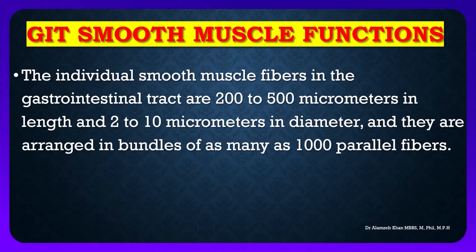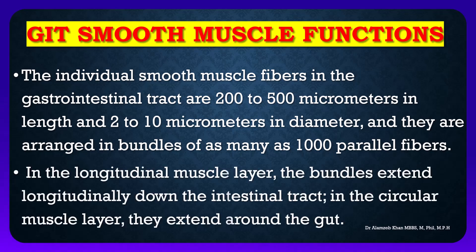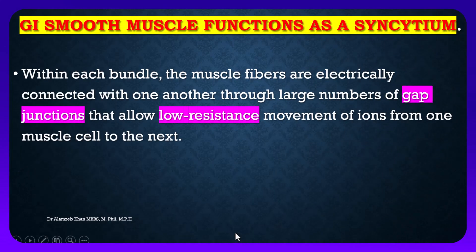The individual smooth muscle fibers in the gastrointestinal tract are 200 to 500 micrometers in length and 2 to 10 micrometers in diameter. They are arranged in bundles of as many as a thousand parallel fibers. In the longitudinal muscle layer, the bundles extend longitudinally down the intestinal tract; in the circular muscle layer, they extend around the gut.